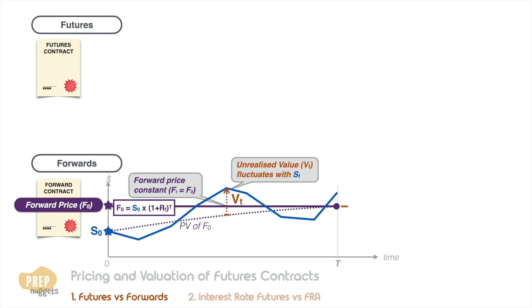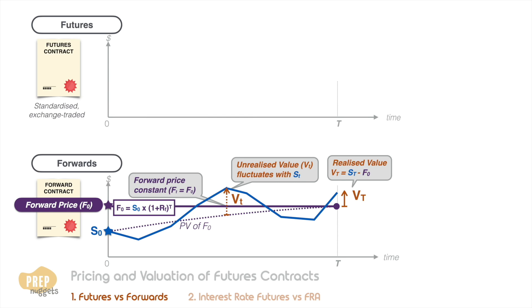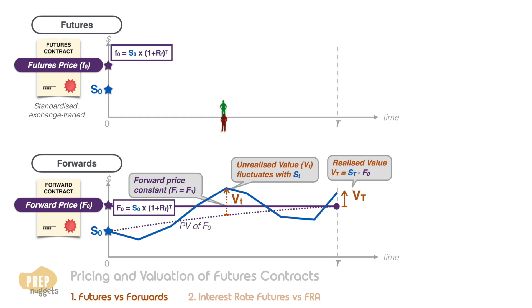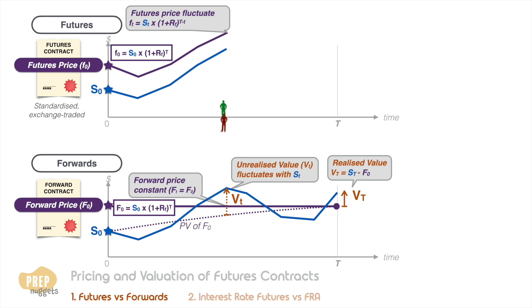This value is realized at the expiration of the forward. In contrast, futures are standardized exchange-traded contracts where traders can long or short the contract at any time over the life of the contract. Although the price of futures should be the same as that of the equivalent forward at initiation, the price of the futures contract will change according to the spot price. Two parties that take a position at a later date will agree on a price that corresponds with changes in the spot rate. Since this is the no-arbitrage price, the value of the contract is always zero.